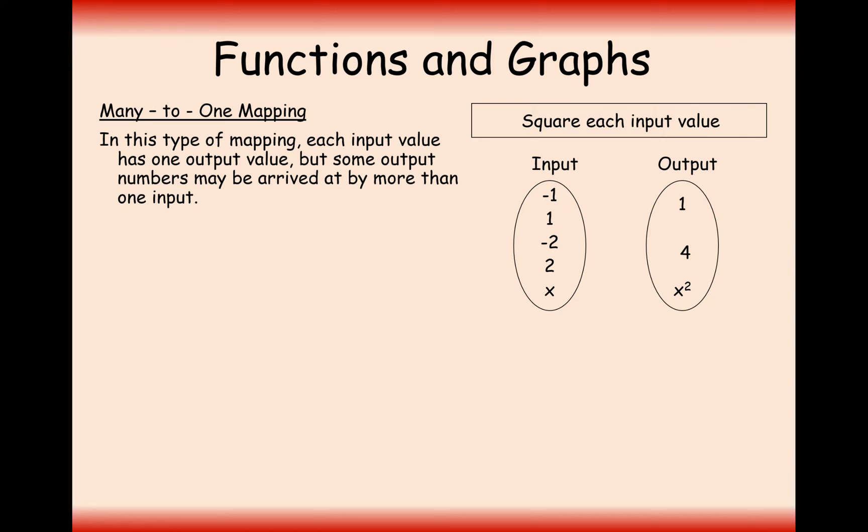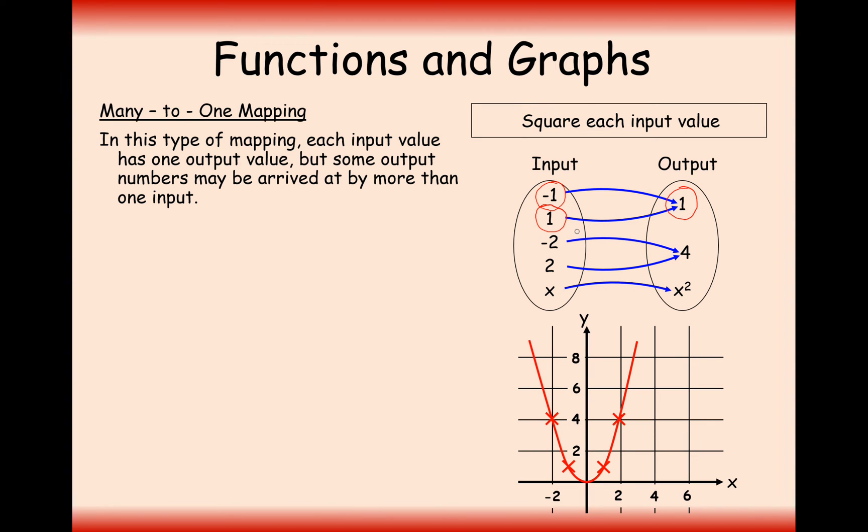It's true that each input value has one output, but in this case here, we have many inputs that can go to a single output. Where we have a many-to-one from inputs to outputs, it's called a many-to-one mapping. Many can mean any number, not just two. It can involve three or four input values going to the same output value. Not all output numbers have to have two or more input values. For example, zero will only be mapped back to zero, but it still counts as a many-to-one mapping.